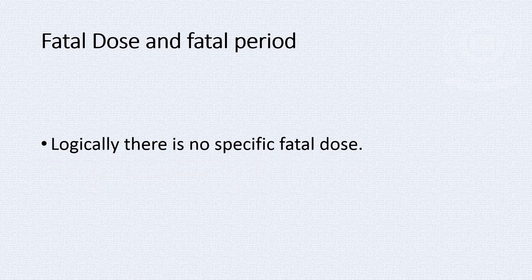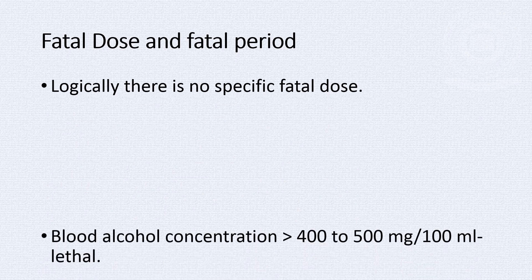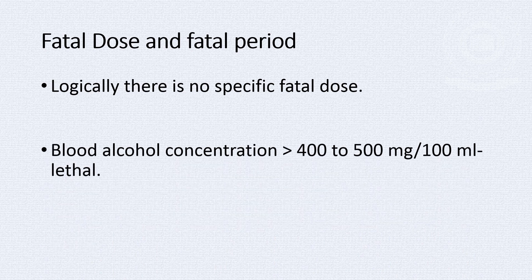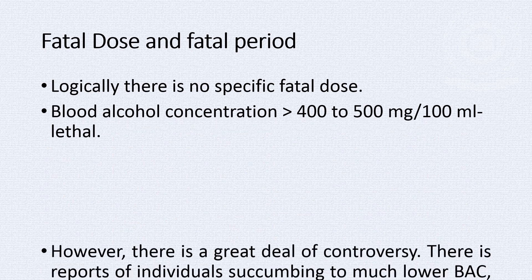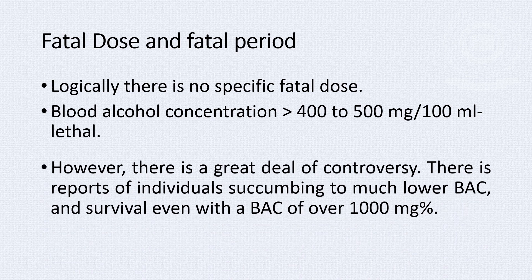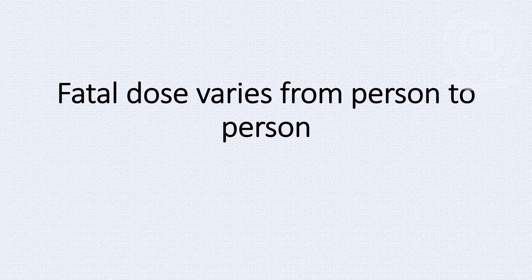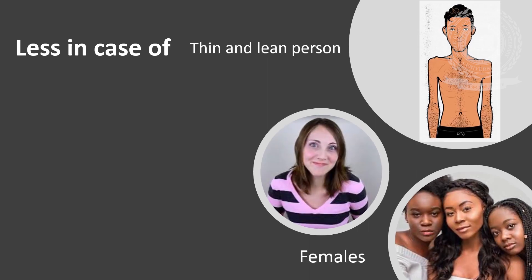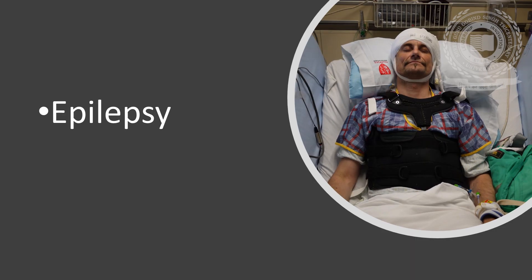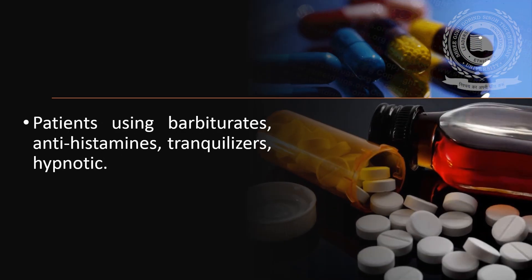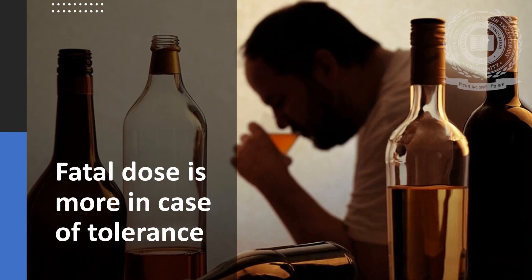Let us discuss the usual fatal dose and fatal period in alcohol poisoning. Logically, there is no specific fatal dose. In terms of blood alcohol, a level in excess of 400–500 mg per 100 ml is usually considered to be lethal. However, there is a great deal of controversy regarding this, since there are case reports of individuals succumbing to much lower blood alcohol concentrations, while there have been reports of survival even with a BAC of over 1000 mg per 100 ml. Fatal dose varies from person to person — less in the case of thin and lean persons, females, mentally unstable subjects, patients suffering from liver disease, epilepsy, cerebral trauma, and patients using barbiturates, antihistamines, tranquilizers, hypnotics, etc. While the fatal dose is more in the case of tolerance.